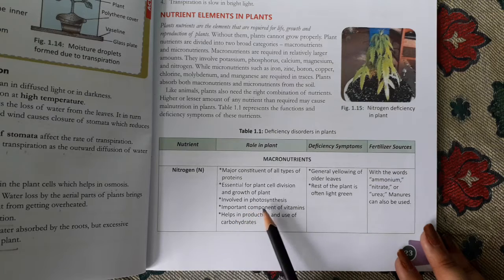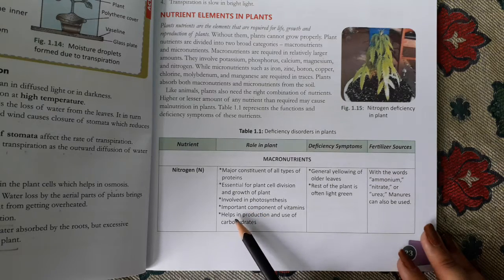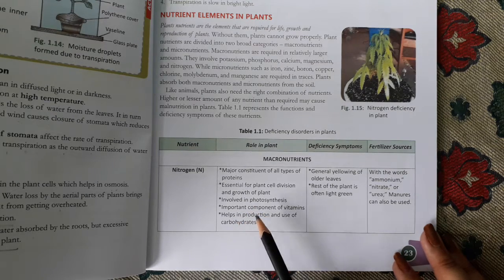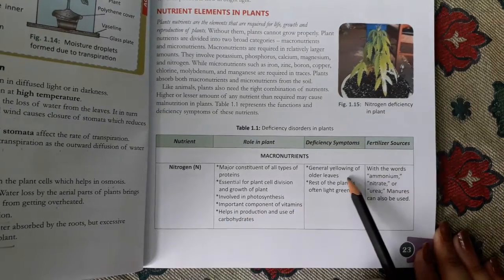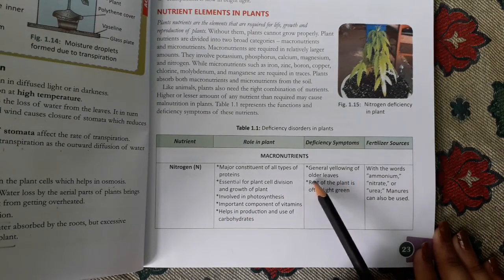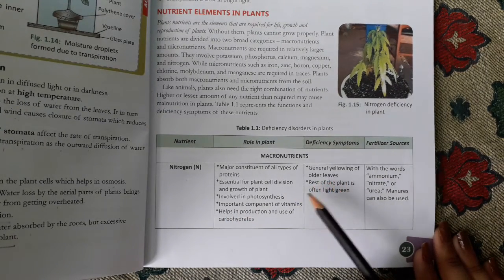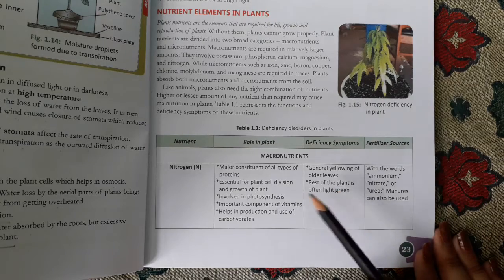Nitrogen is involved in important components and vitamins. It helps in the production and use of carbohydrates. The deficiency symptom is general yellowing of older leaves, and the rest of the plant often appears light green.